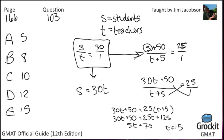We cross multiply: 30T plus 50 equals 25 times T plus 5, which gives us 30T plus 50 equals 25T plus 125. Subtract 25T from both sides: we get 5T. Subtract 50 from both sides: we get 75. Divide by 5: T equals 15. The last line of the question asks for the present number of teachers, which is T. So T equals 15, answer choice E.